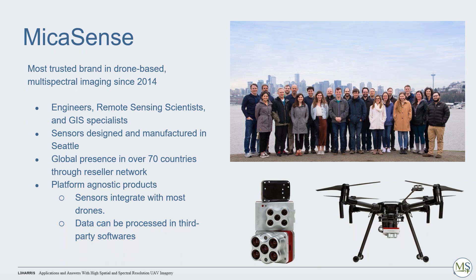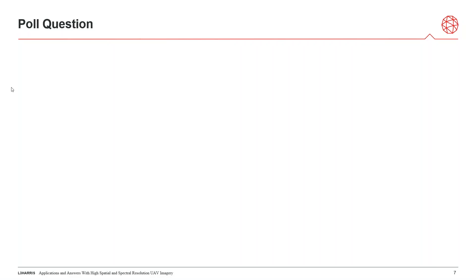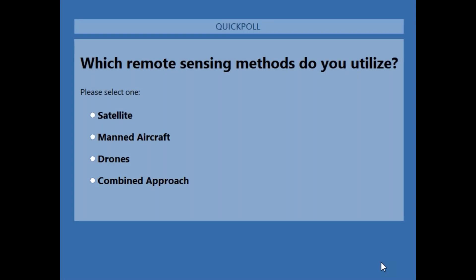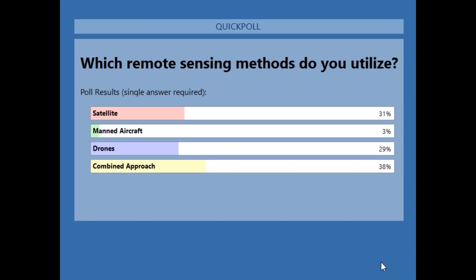Before we go into the nitty-gritty, we'll run a quick poll to get an overview of which remote sensing methods you are using. The question is: which remote sensing methods do you utilize? Is it satellite, manned aircraft, drones, or a combined approach? Interesting results coming in: 31% with satellite, 29% with drones, 38% with a combined approach, and only 3% with manned aircraft. Hopefully this information is going to be really useful.